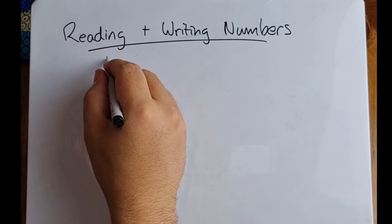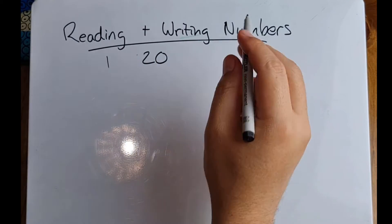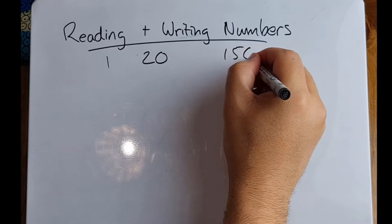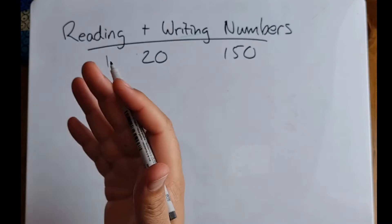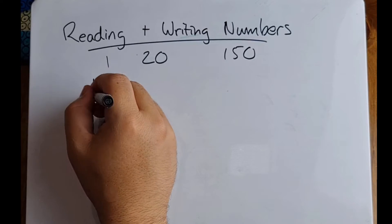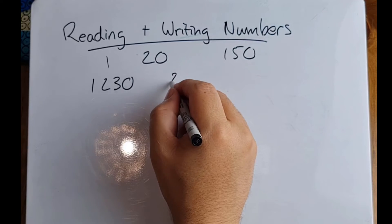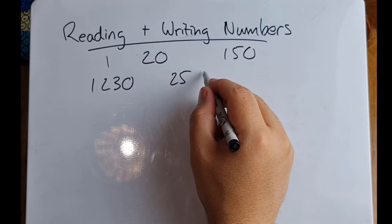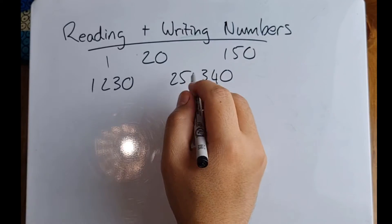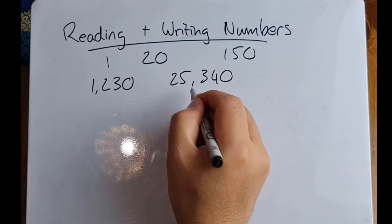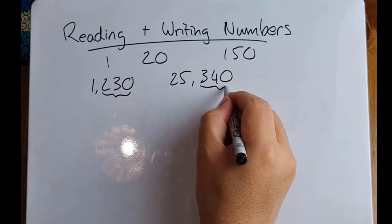We can read and write a number like 1. We've got 20, and I'm going to use 150. Then the numbers get a bit bigger — we have things like 1,230, then something like 25,340. And remember what we did in our previous video: we started seeing that separation coming through. The numbers are now grouped in threes.